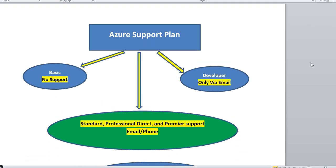Azure support plans have some categories from Microsoft. There are four or five categories. For the Basic plan, you cannot get any kind of support — there is no support for the Basic plan. For the Developer plan, you will get support only via email. There are more support plans: Standard, Professional Direct, and Premier, where you can get support via email as well as phone. Microsoft engineers will be available over the phone and email only for Standard, Professional Direct, and Premier.